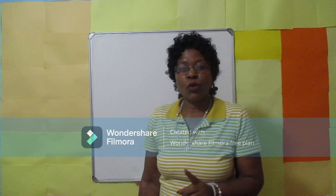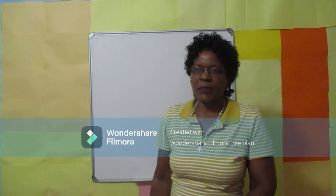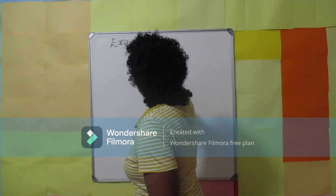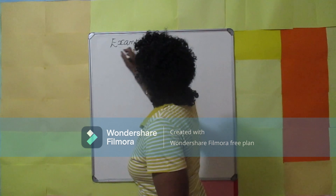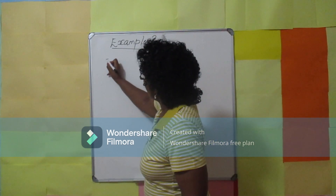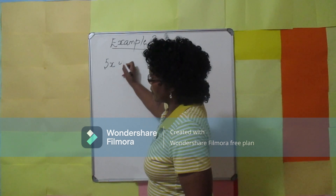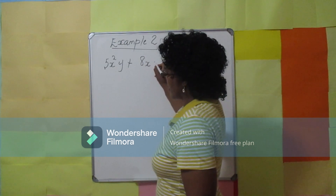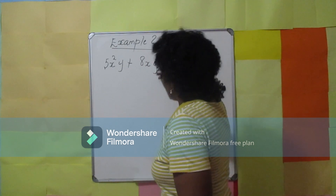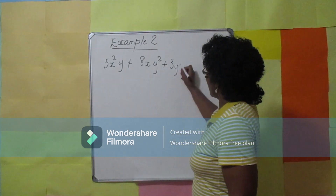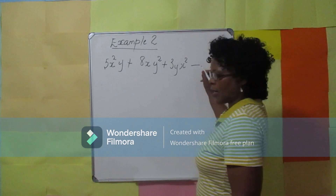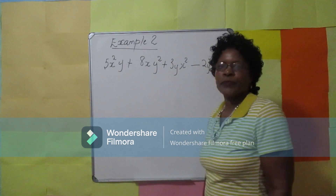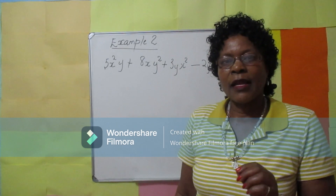In Example 2, we have more than one variable. The expression is: 5xy to the power 2, plus 8xy to the power 2, plus 3y, plus 1x to the power 2, minus 2y to the power 2. Let's identify like terms.